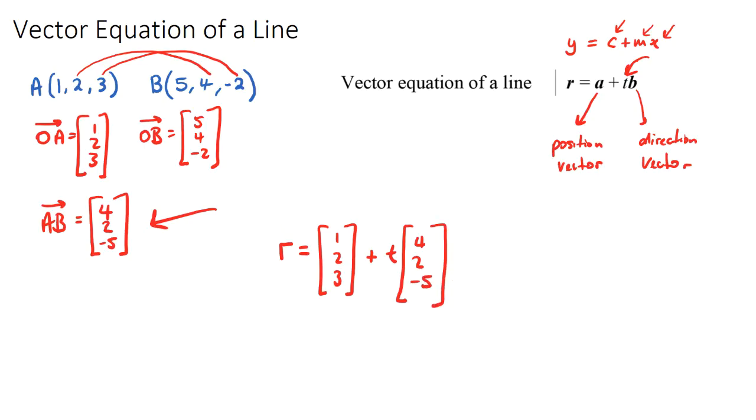This is the answer of our vector equation of a line, and what this tells us is that if I give you any time for T, or if I want to sub in any value here for T, we can actually work our way across each of these lines,